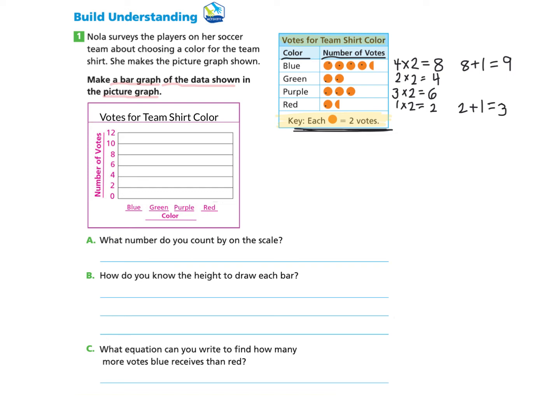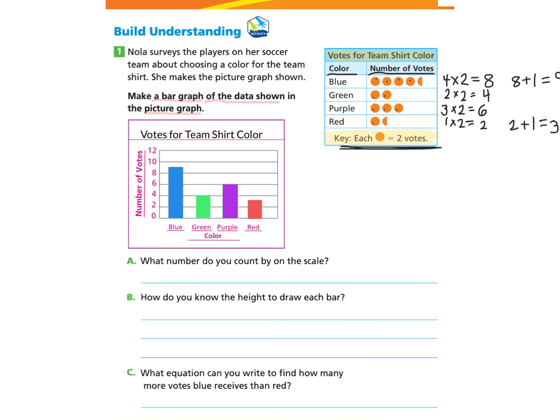So now we can use this information to make our vertical bar graph. So here I have created four bars to match the data. Nine for blue, four for green, six for purple, and three for red.